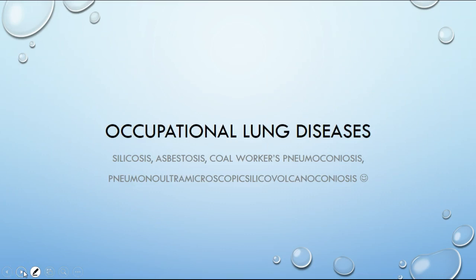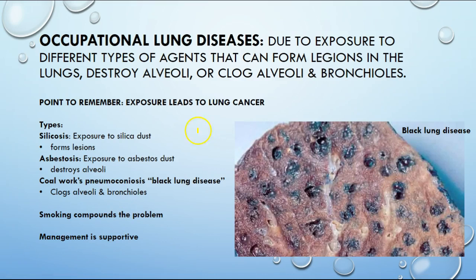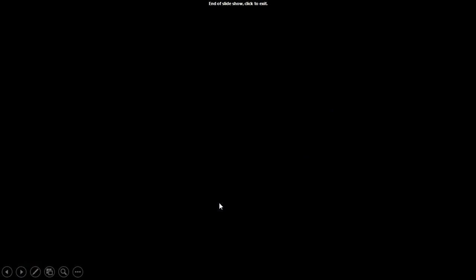The type of work a patient does can lead to occupational lung disease. Exposure to agents like silica, asbestos, or coal dust gets into the lungs, forms lesions, destroys alveoli, or clogs the alveoli and bronchioles. Smoking compounds the problem, so smoking cessation is important. Unfortunately, occupational lung disease is not reversible, so management is supportive. Make sure to check out the separate short video on chest tube management.